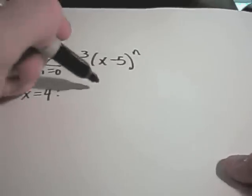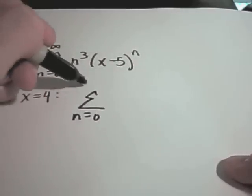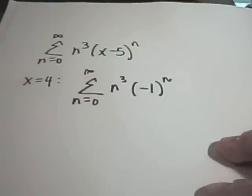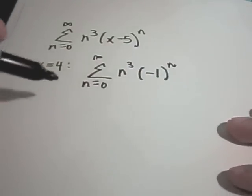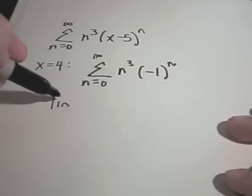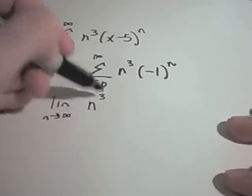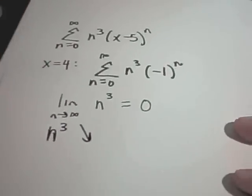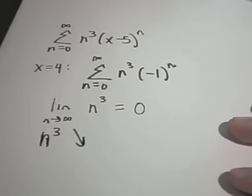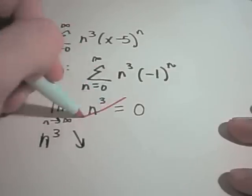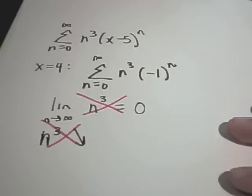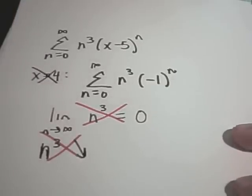Checking x equals 4: plugging in gives the sum from n equals 0 to infinity of n cubed times negative 1 to the n. This is an alternating series, but for it to converge we'd need the limit as n goes to infinity of n cubed to equal 0, and we'd need n cubed to decrease. Neither condition holds — the limit of n cubed is not 0, and n cubed doesn't decrease as n gets bigger. So x equals 4 does not give convergence.